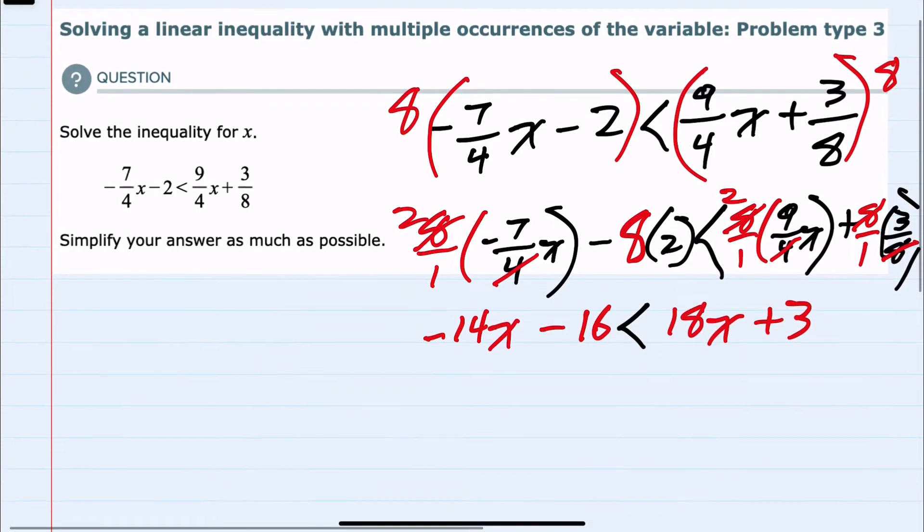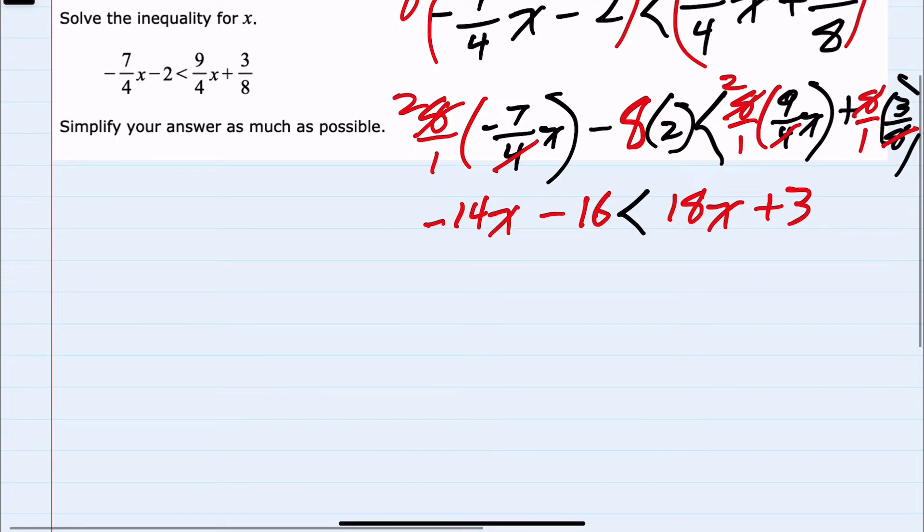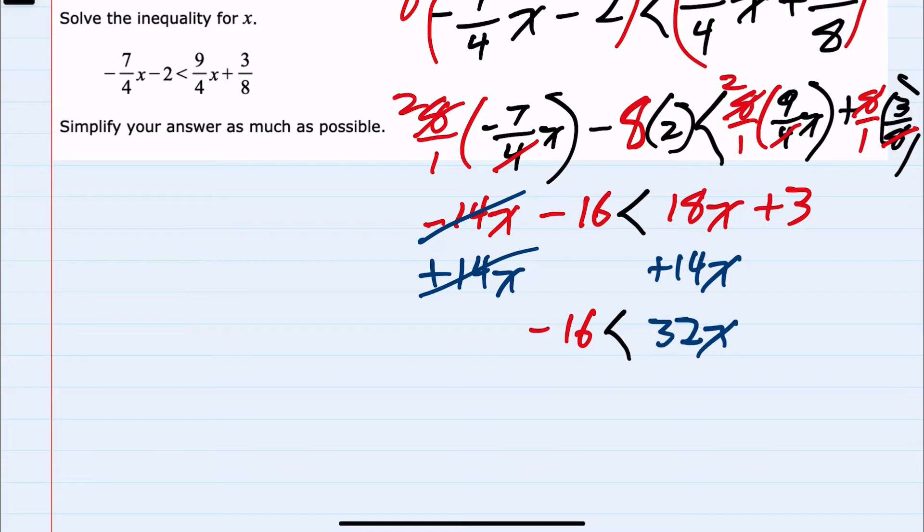I often like to avoid negatives, so I'm going to add the 14x to both sides because not only does it cancel the x's from that left-hand side, it also gives me a nice positive 32x on the right-hand side, bringing down that plus 3.